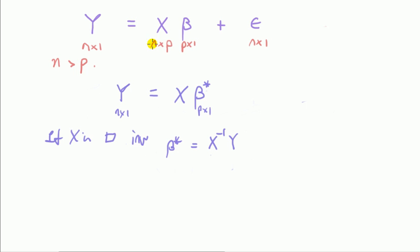Well, usually in regression data analysis, we have more observations than we have parameters to solve for. Also, the other problem is that our Y will not, all the observations in Y will not lie in the column space of X.